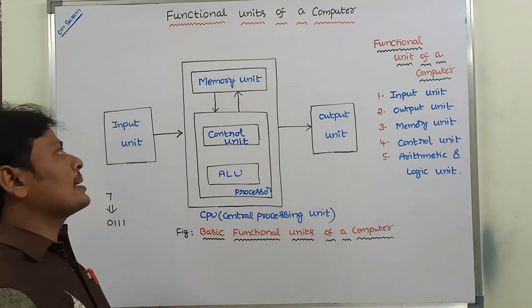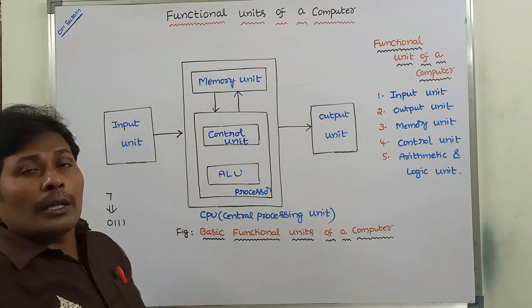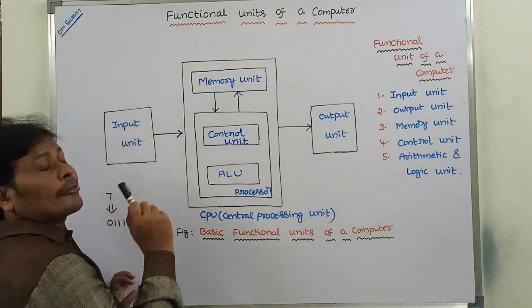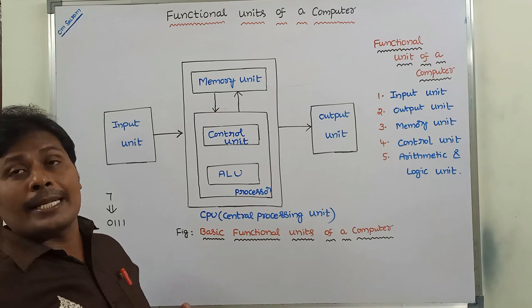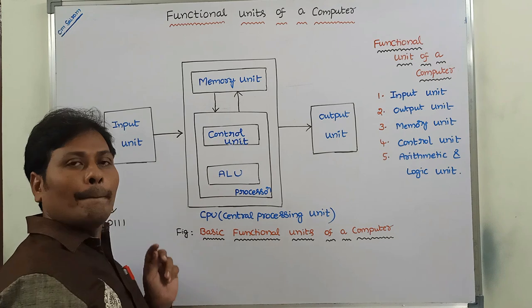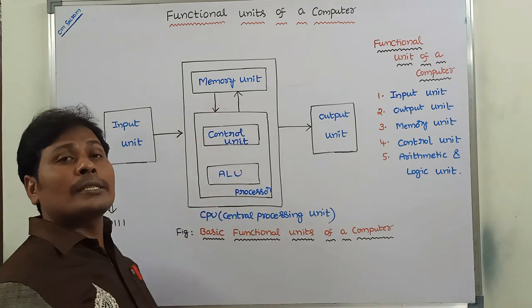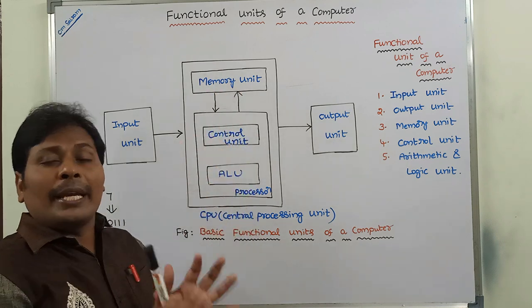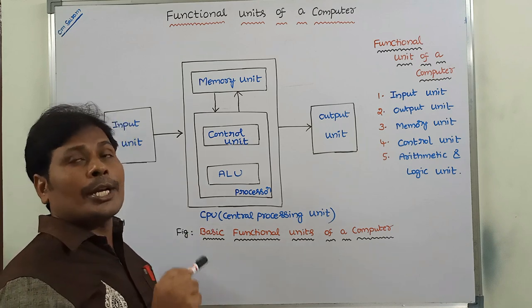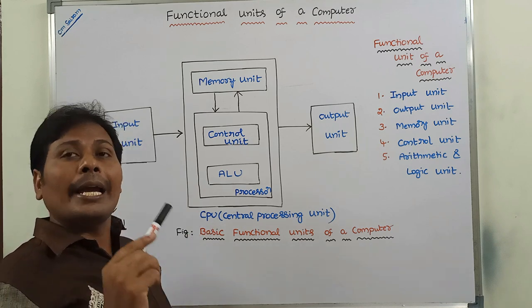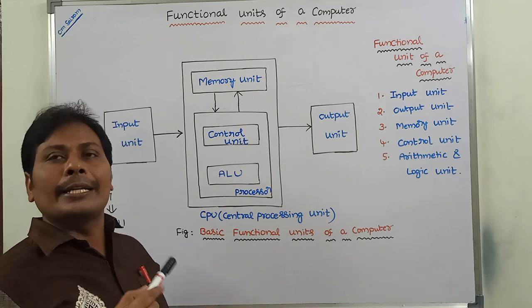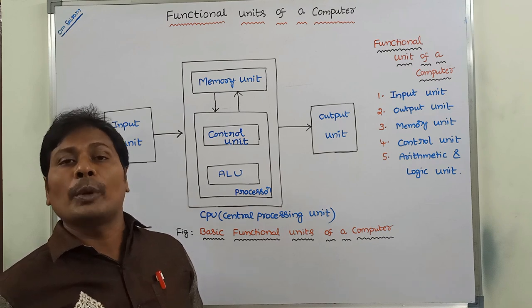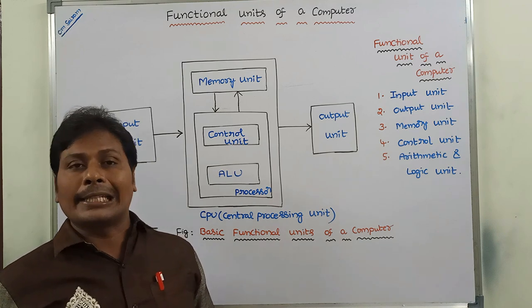Next one is the memory unit. The memory unit is one of the most commonly used units because whatever information is read from input devices such as the keyboard is stored in the memory unit. The memory unit is used for storing both programs and data. The memory unit can be divided into two parts: one is the instruction part, where we store programs and instructions, and the second one is the data part, where we store operand data needed to perform operations.